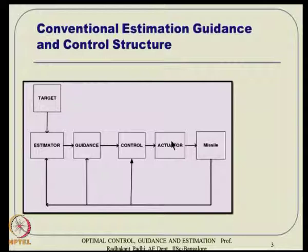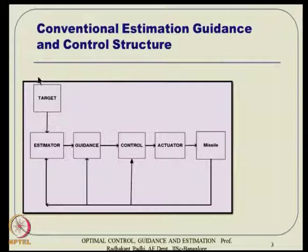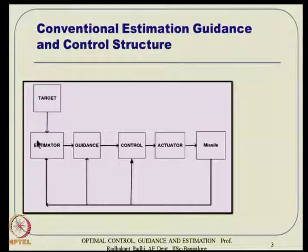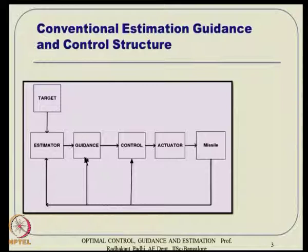These concepts are largely in the context of missile guidance, though we have also experimented with IGC in UAVs. The primary focus here will be on missiles. When talking about missile guidance and control, we need target information, typically captured through radar or seeker. There is a target estimation loop that also estimates the missile's position, velocity vector, and relative error between target and missile.